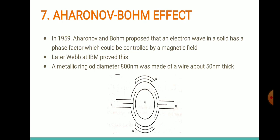Later in 1985, Webb at IBM proved the Aharonov-Bohm effect. He took a metallic ring of diameter 800 nanometers made of wire about 50 nanometers thick. This was the structure.